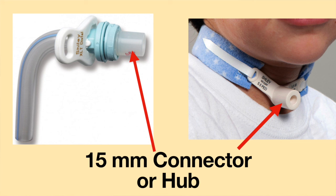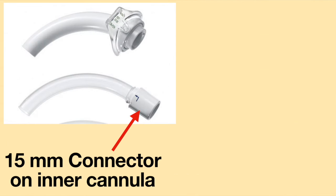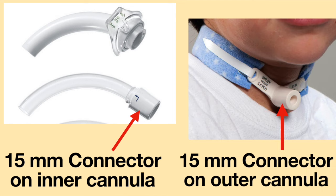The part of the tracheostomy tube which connects to a ventilator is called the 15 mm connector, or hub. On some tracheostomy tubes, the 15 mm connector is on the inner cannula, while on other tracheostomy tubes, the 15 mm connector is on the outer cannula.